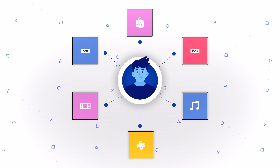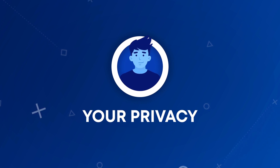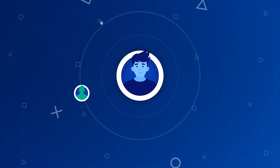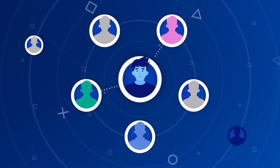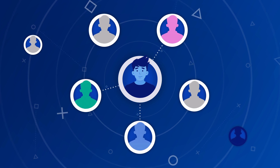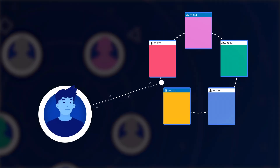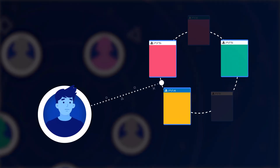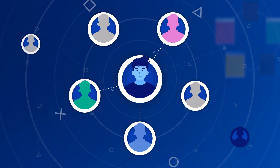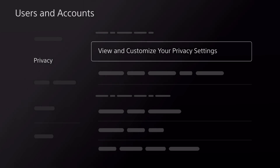But we understand that every person's privacy preferences are different. So we provide you with options to tailor your PlayStation experience so it suits you, including what we collect about you, how we use it, whether someone can interact with you, and how and what we share about you. Do you want other players to see when you're online? Do you want to choose which of the games you've played can be seen by other players? Do you want to control who can invite you to be a friend? These are all options you can adjust, along with many others, in your privacy settings.